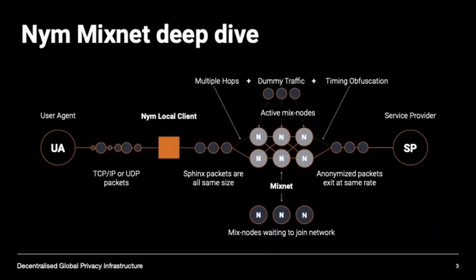Traffic leaves your local Nym client — either in an app or running as a persistent process on your phone or laptop — and takes three hops through the mixnet. Each mix node passes dummy, identically sized traffic between themselves with a small timing obfuscation, and then all anonymized packets leave the mixnet at exactly the same rate, going to either a service provider or another user, such as in a chat app.